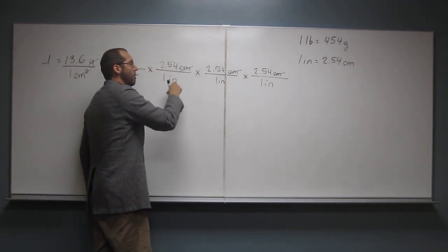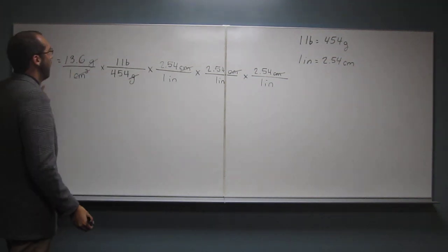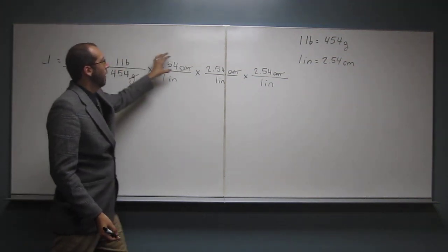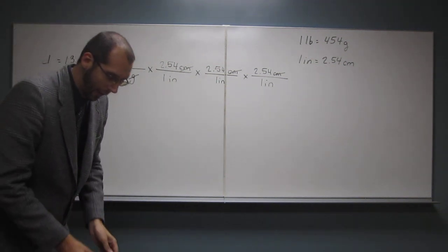We multiply inches times inches times inches. What do we get? Cubic inches. Cubic inches, okay? So all we've got to do is multiply all the numerator stuff and then divide it by all the denominator stuff. Okay, so let's do that together.